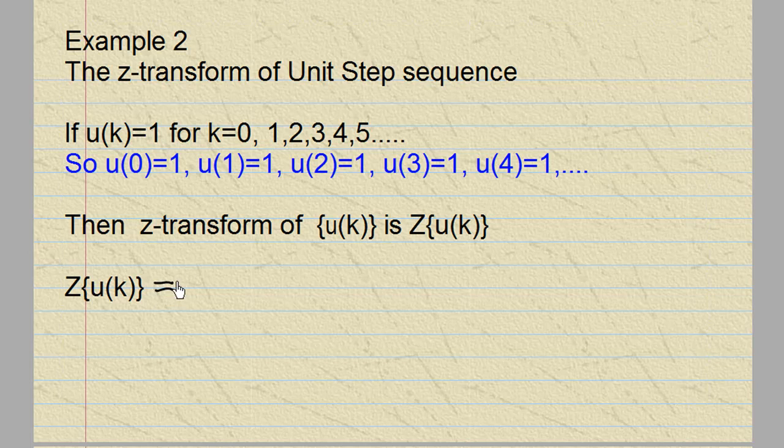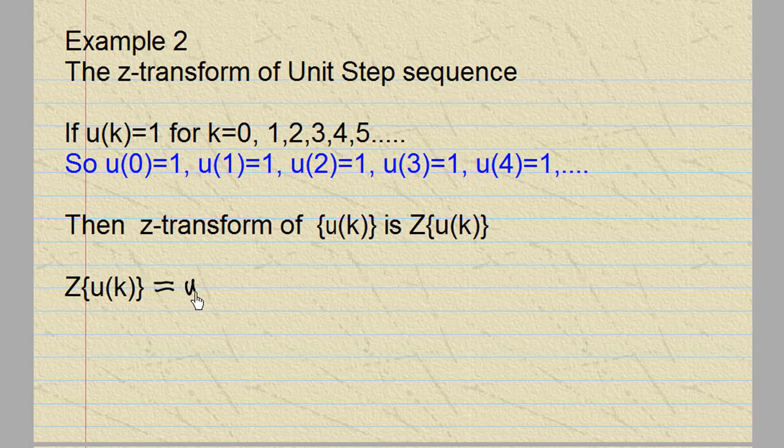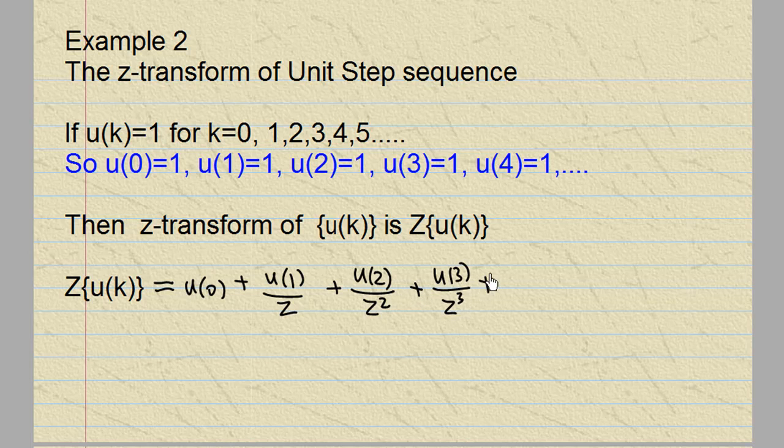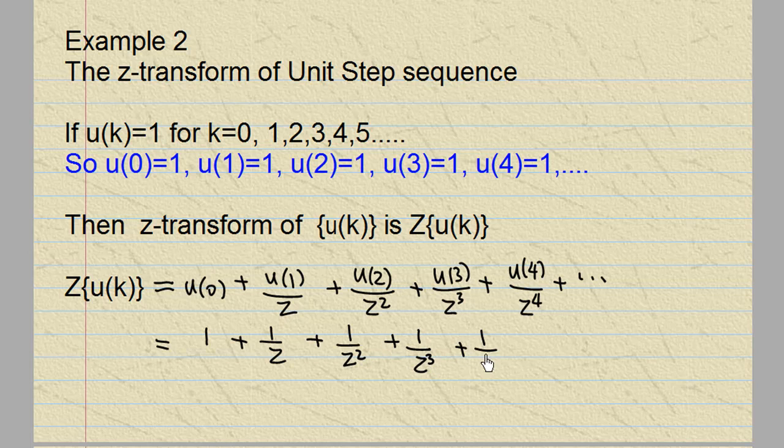This is equal to u(0) + u(1)/z + u(2)/z² + u(3)/z³ + u(4)/z⁴ and so on. But we know that u(0) = 1 and u(1) = 1 also, u(2) = 1, u(3) = 1, u(4) = 1, and you have an infinite sum like this.